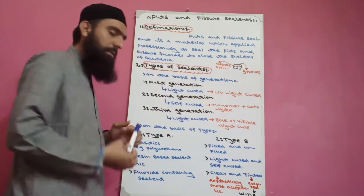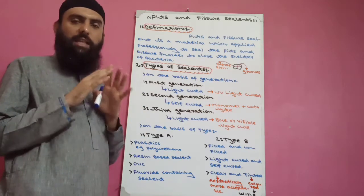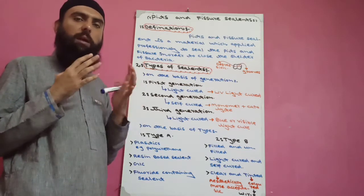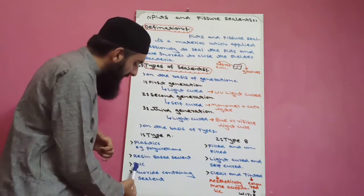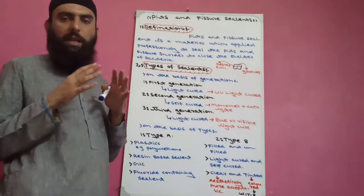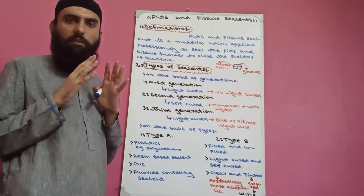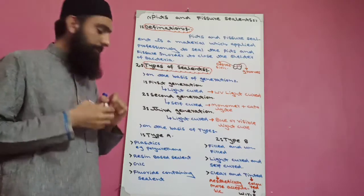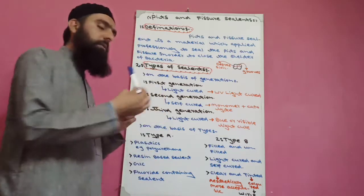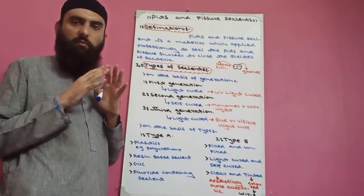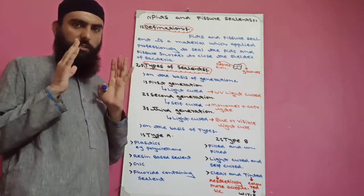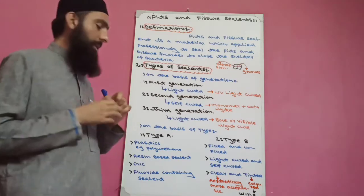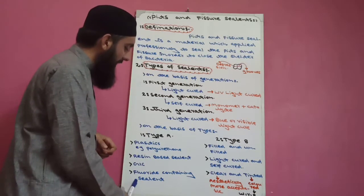The second type in Type A is resin-based sealant. Resin-based sealants have very good sealing properties and good strength. It consists of resin and is set by self-cure or light. Third is GIC — glass ionomer cement. We also use glass ionomer cement as a pits and fissure sealant due to its anti-cariogenic activity, which is due to fluoride release. Fourth is fluoride-containing sealant — those sealants which consist of fluoride also have anti-cariogenic effect and resistance to caries development. These four sealants come under Type A.